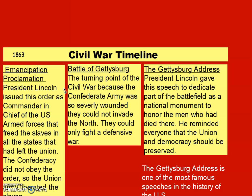The Confederacy, of course, did not obey the order, so the Union Army had to liberate the slaves. If the Union Army had taken over your city, they would free the slaves. But if you were still under Confederate control, then you were still a slave.